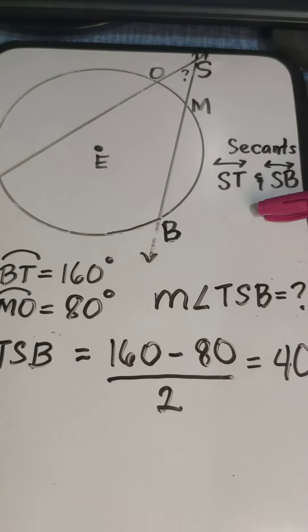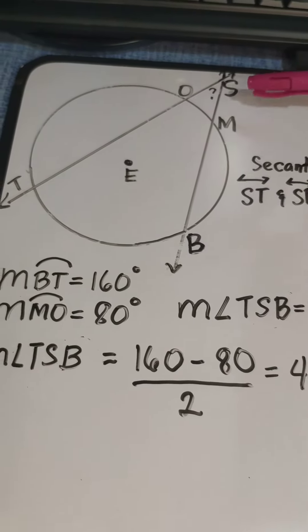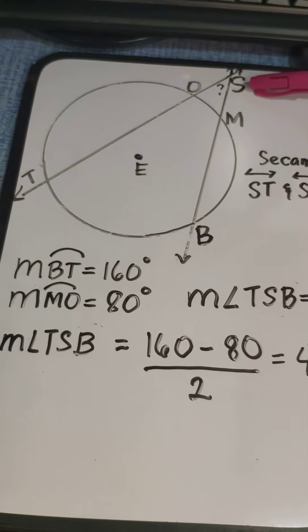When these two secants intersect outside the circle, the point of intersection is point S.